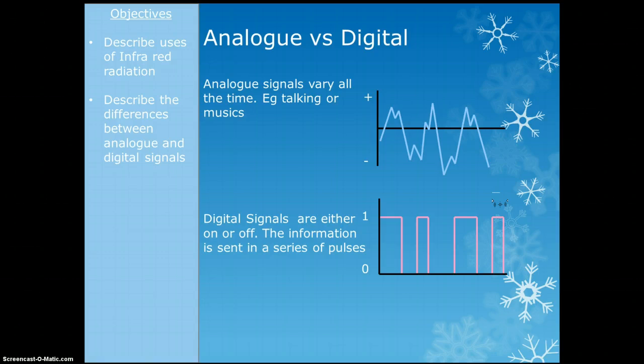Next is analogue versus digital. Digital signals can either be on or off — they're just binary, basically. It's one option or the other, and we send that information in a series of pulses. Digital is what we've moved to a lot now.